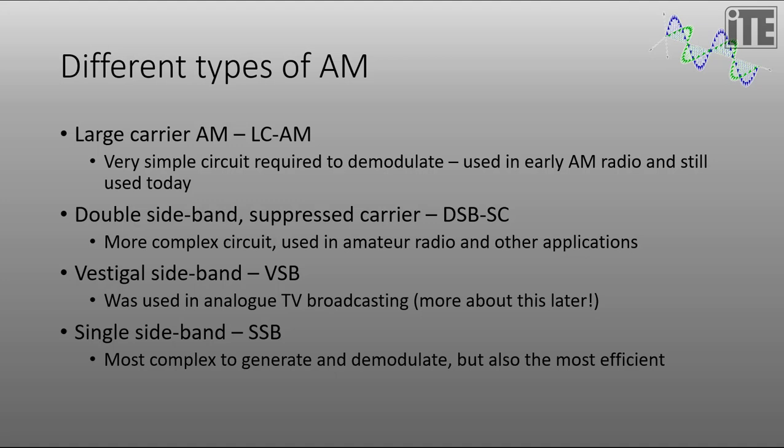Another type of Amplitude Modulation is Double Sideband Suppressed Carrier, which requires a more complex circuit. This is used in amateur radio and various other applications. And then there's another type called Vestigial Sideband or VSB. And that's used in the old analog TV broadcasting, which we no longer use in Australia. We now use Digital Video Broadcasting. We'll cover that in a later video.